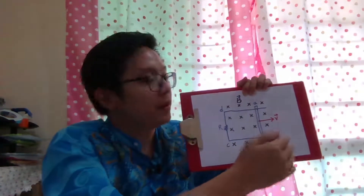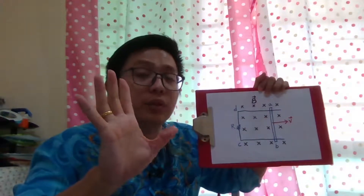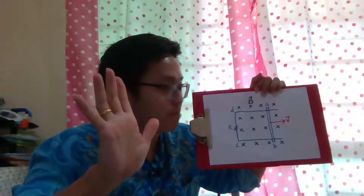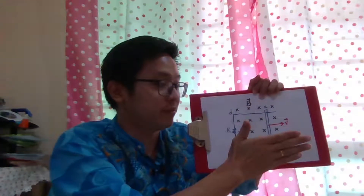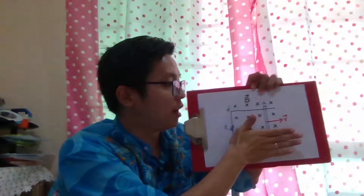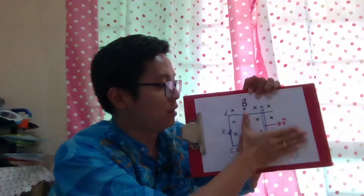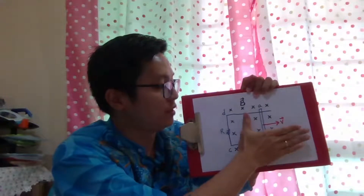Using the right-hand rule: my forefinger points to the right because that is the velocity. My palm faces into the page because that is the magnetic field direction. So my thumb points upward — my thumb is upward, representing the induced EMF or induced current direction.